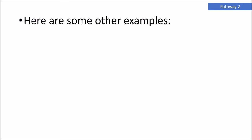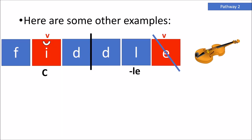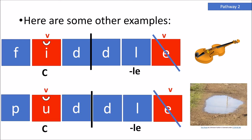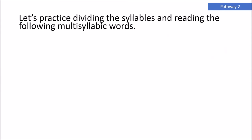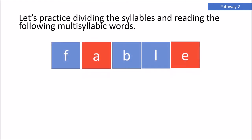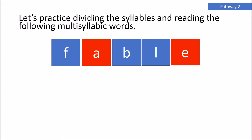Here are some other examples: FIDDLE, PUDDLE. Let's practice dividing the syllables and reading the following multisyllabic words. The first thing we need to do is identify the vowel spots. We notice that there is a consonant LE as the second syllable, so when we have the consonant LE, we need to keep that together. We're going to draw a line between the A and the B to divide these syllables and keep that consonant LE together.